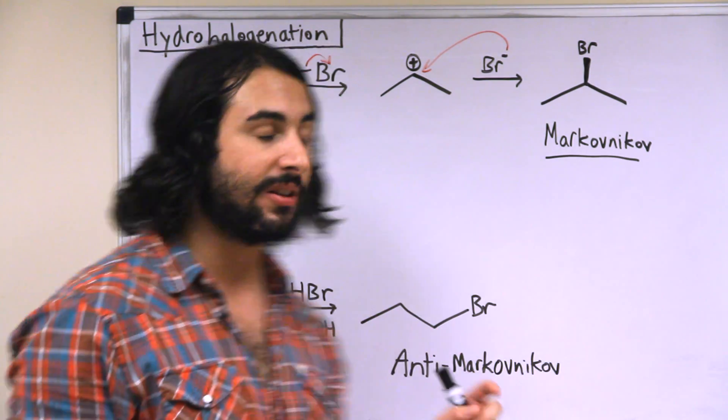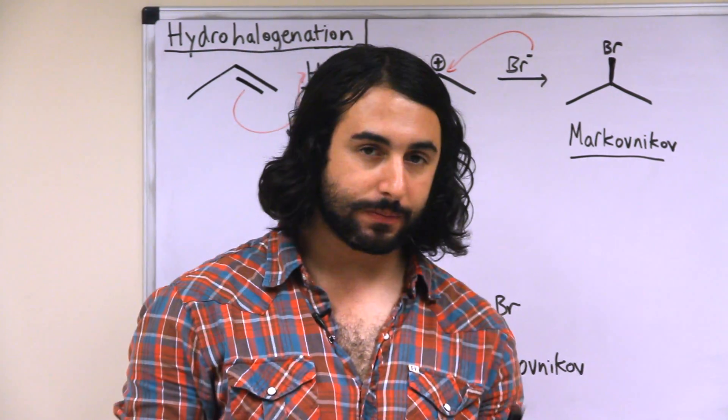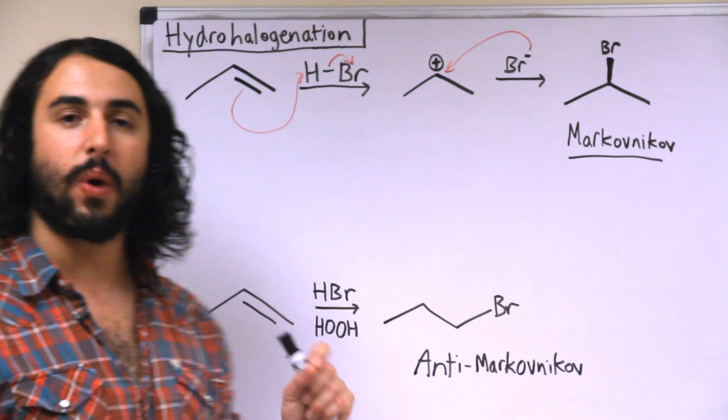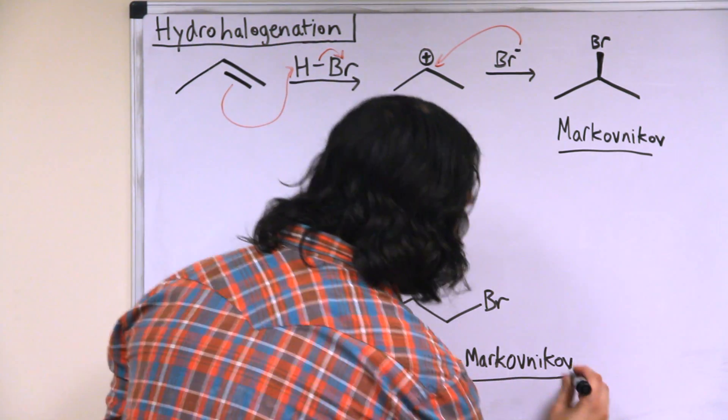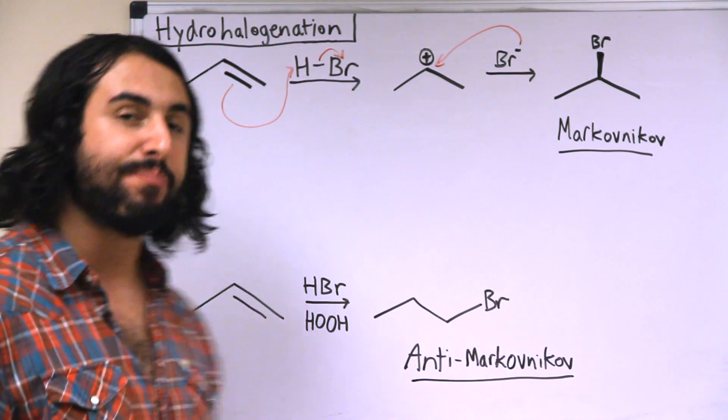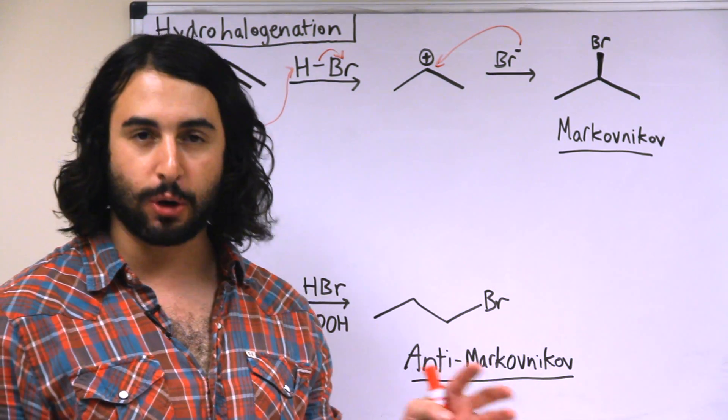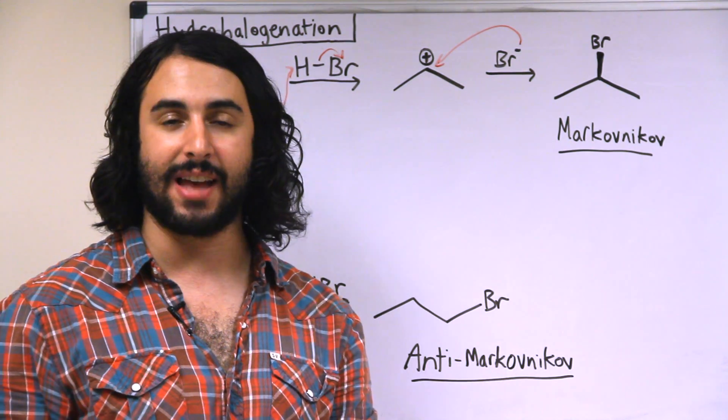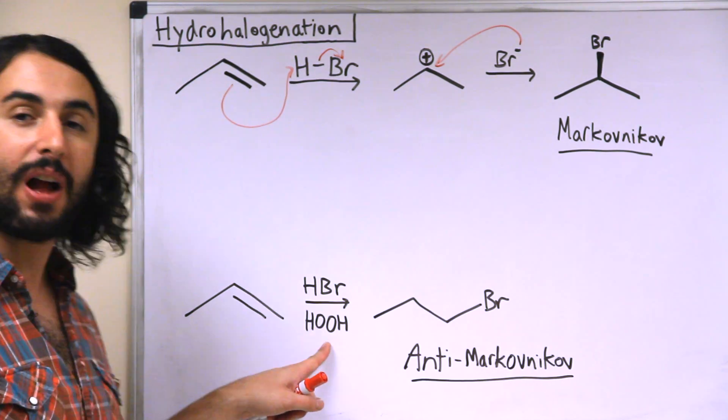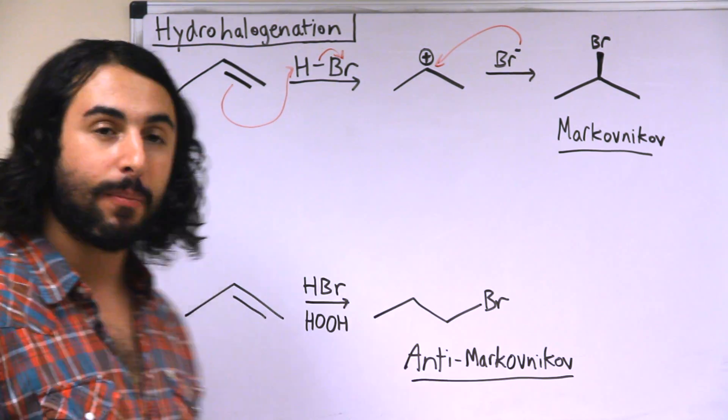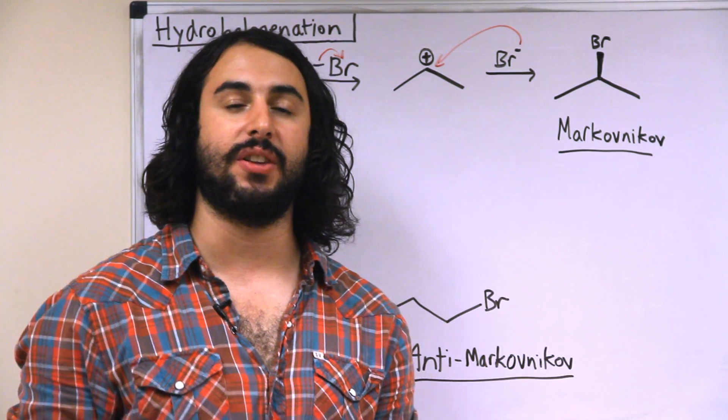Now there's ways to get the anti-Markovnikov product. In this case, running this reaction in the presence of peroxides will promote the anti-Markovnikov product. The mechanism is a little bit more complicated and involves radicals, so we'll look at that another time. But for the moment we just need to understand that when running in the presence of peroxides, that will promote anti-Markovnikov regiospecificity.